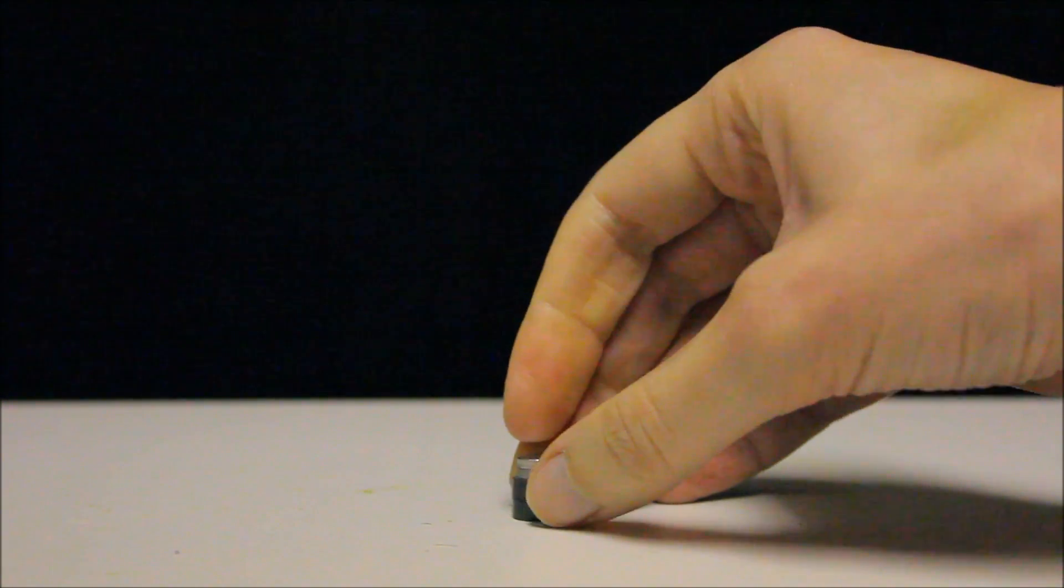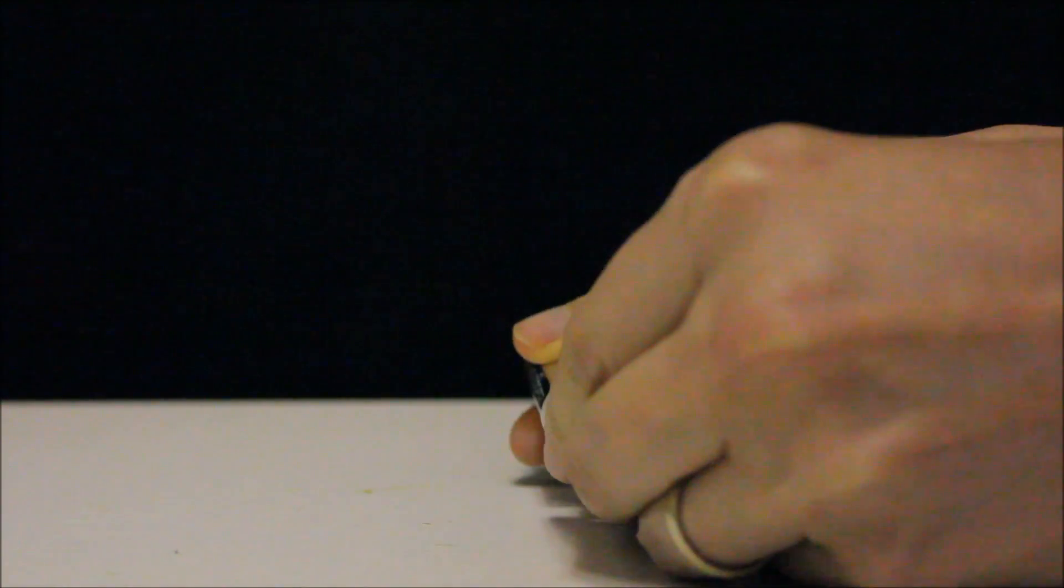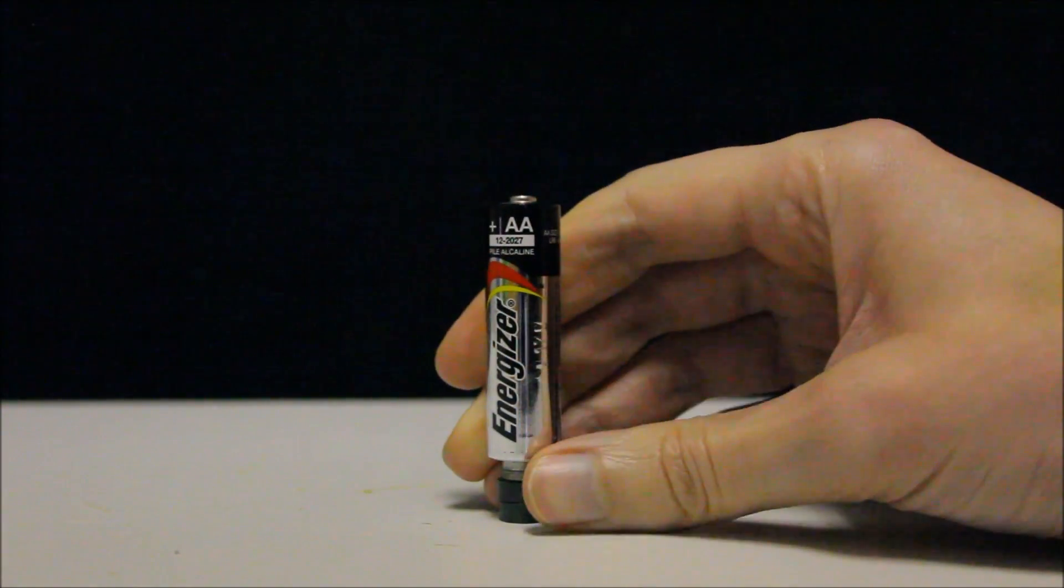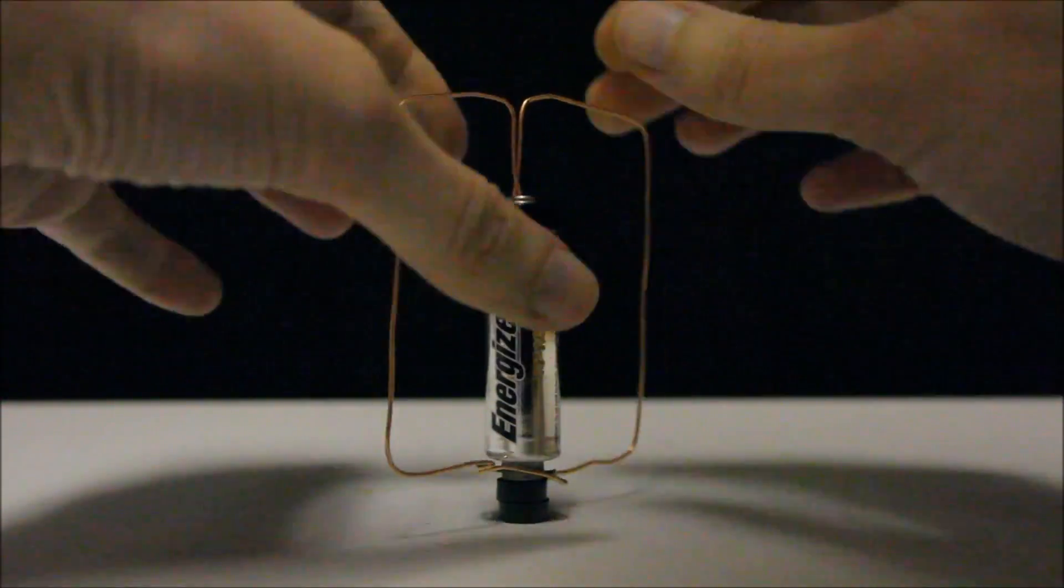Let's stack the magnets. Add the magnets to the bottom of the battery and place the copper wire on top of the battery.